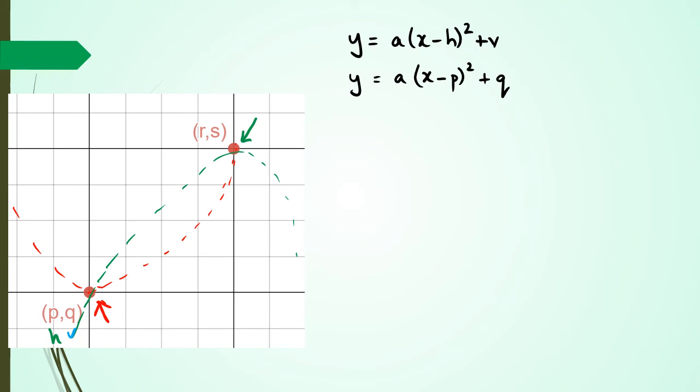Now to figure out A, I need to substitute another point. In this case, the only other point that I could use is RS. I need a different color. Okay, so I'm going to use RS to substitute to figure out what the value of A is. Now I know that X in this point is R, and Y in this point is S. So I can rearrange this equation here, and I can write it as, instead of Y, I write it as S equals A. X is equal to R, so I've got R minus P squared plus Q.